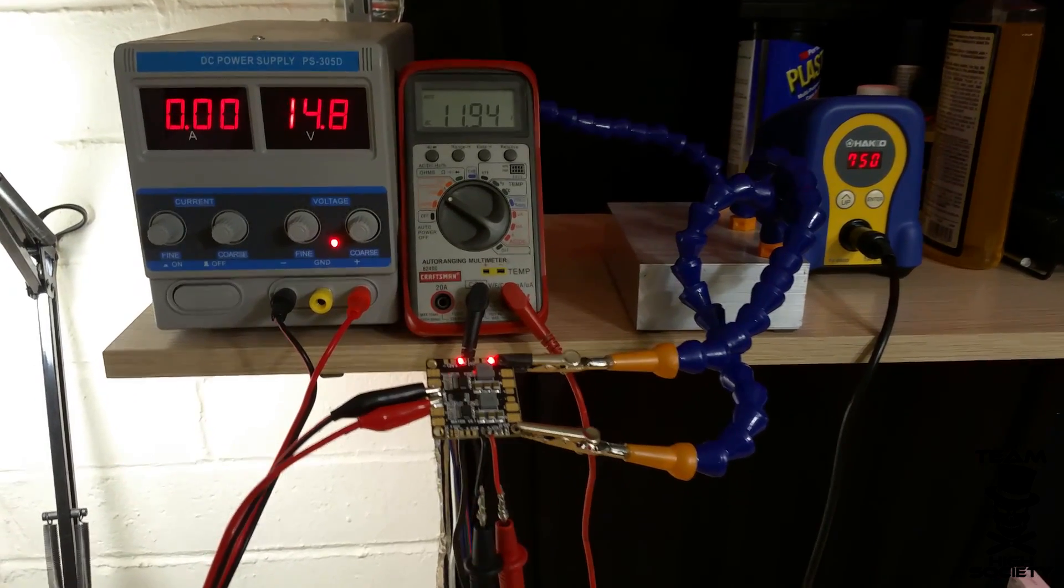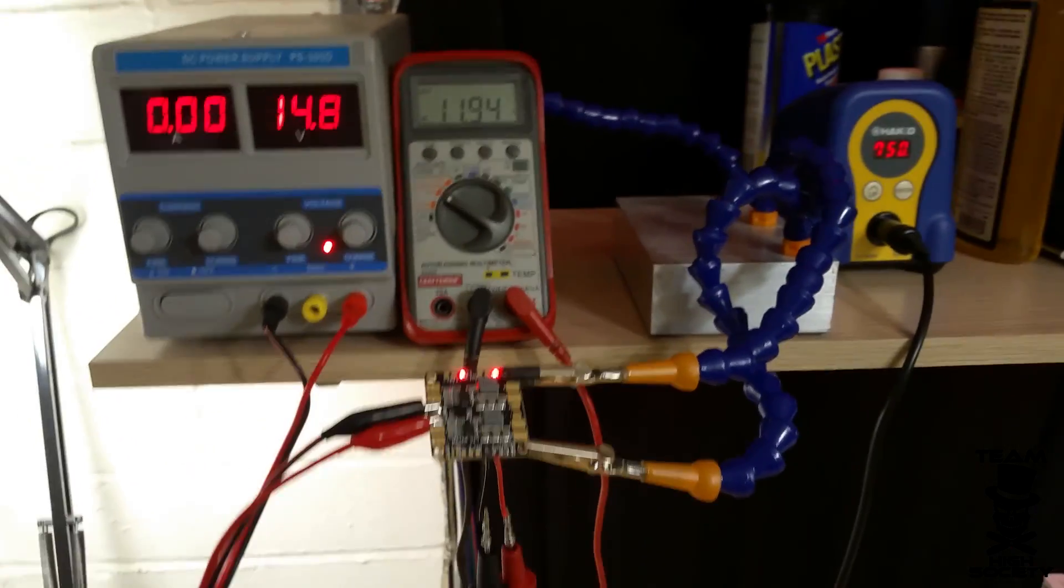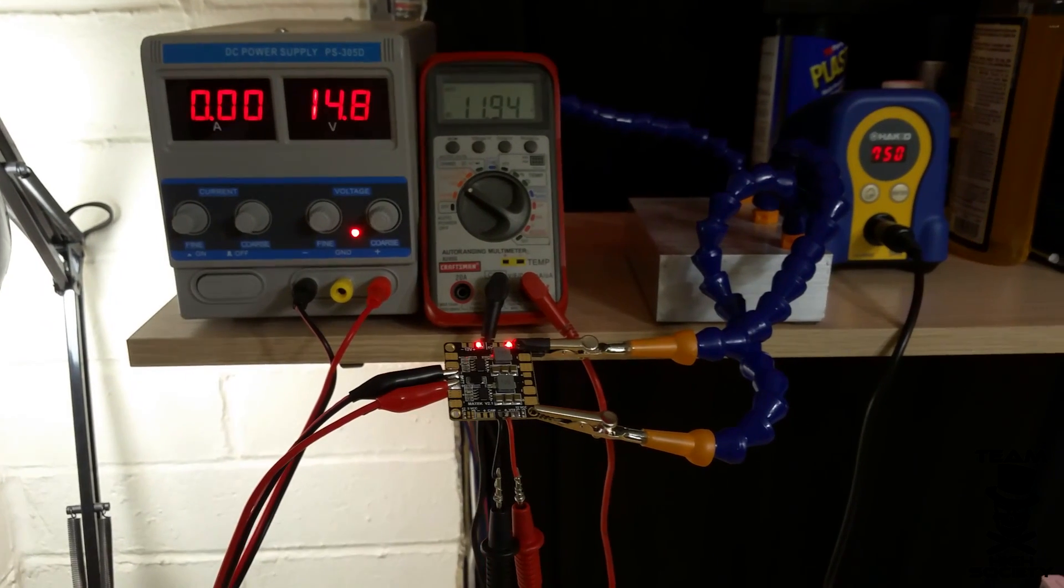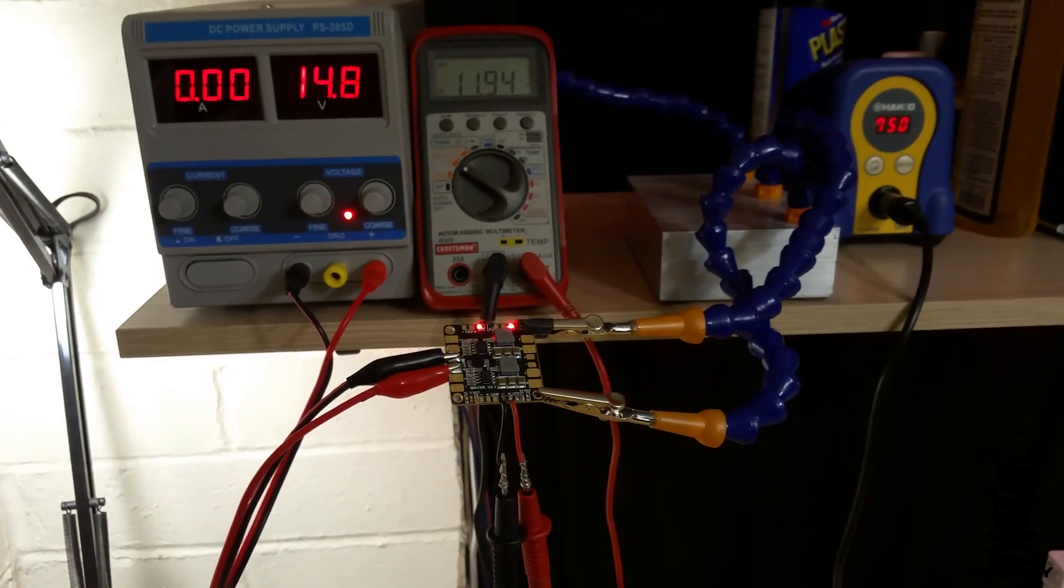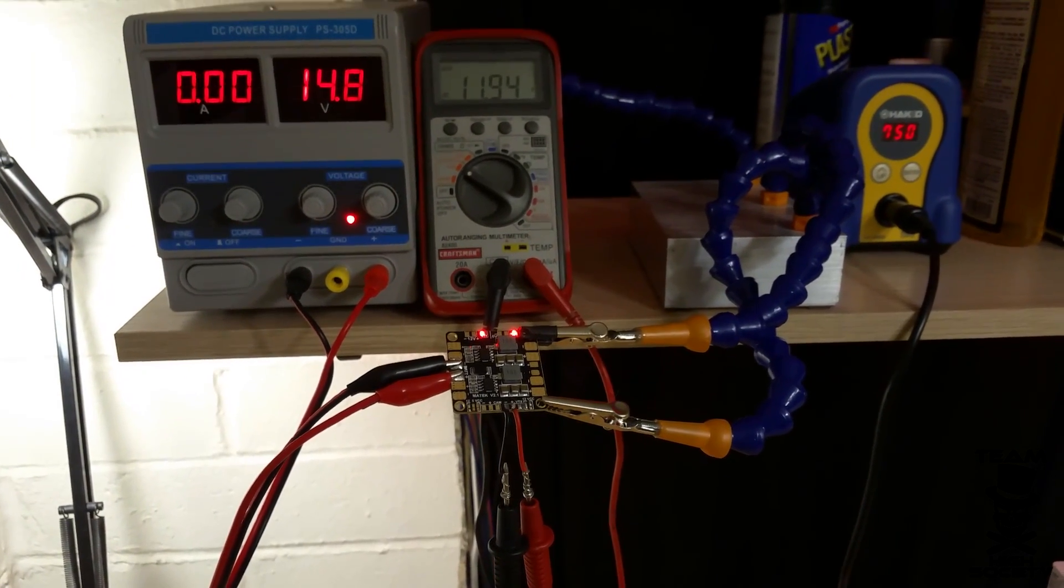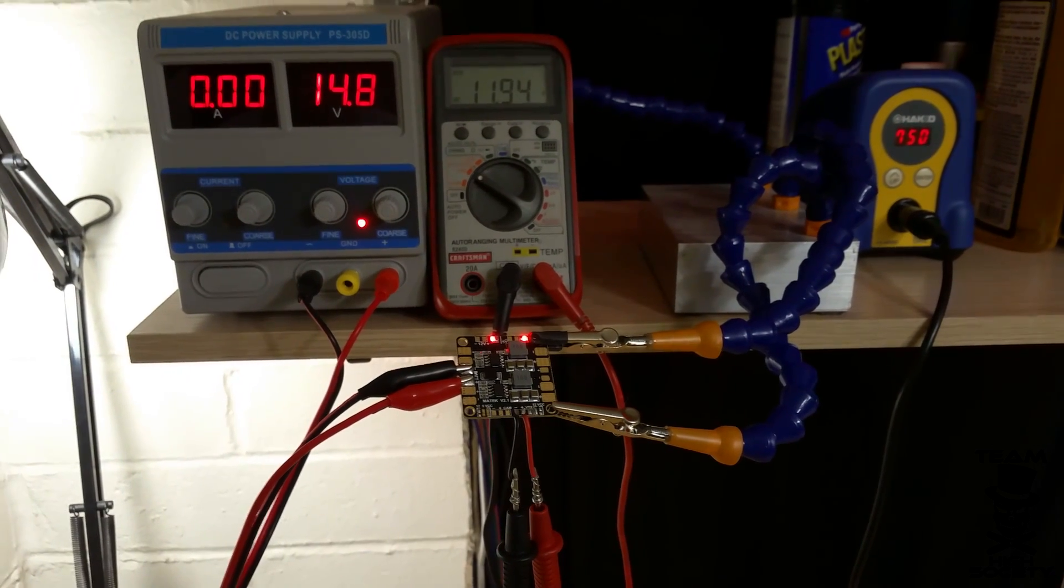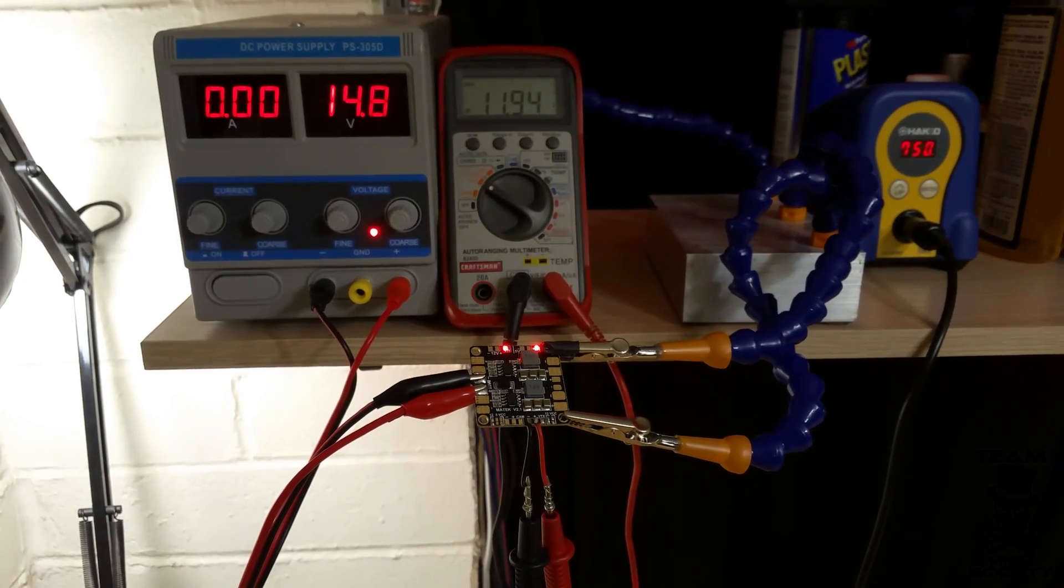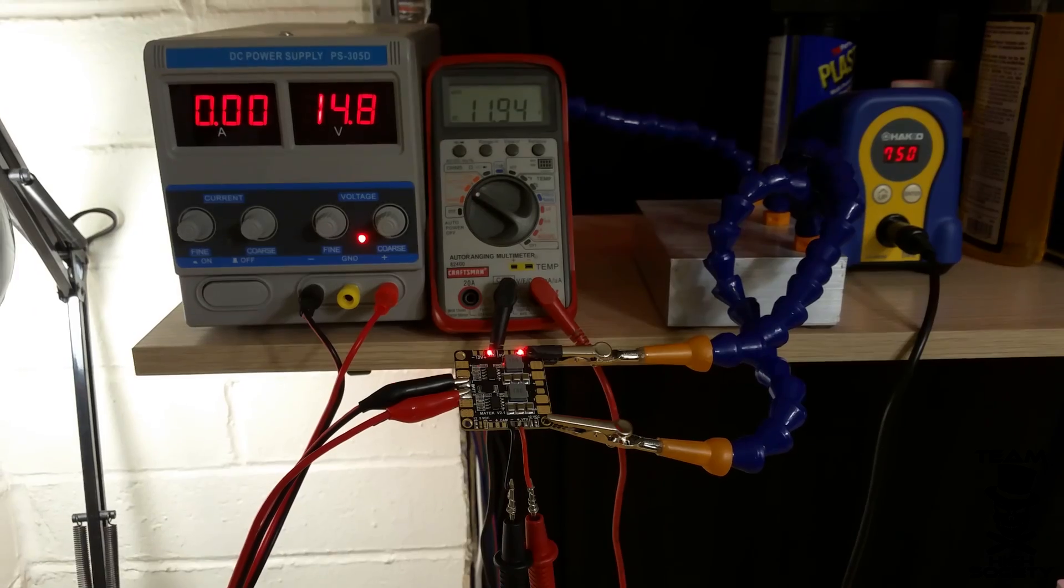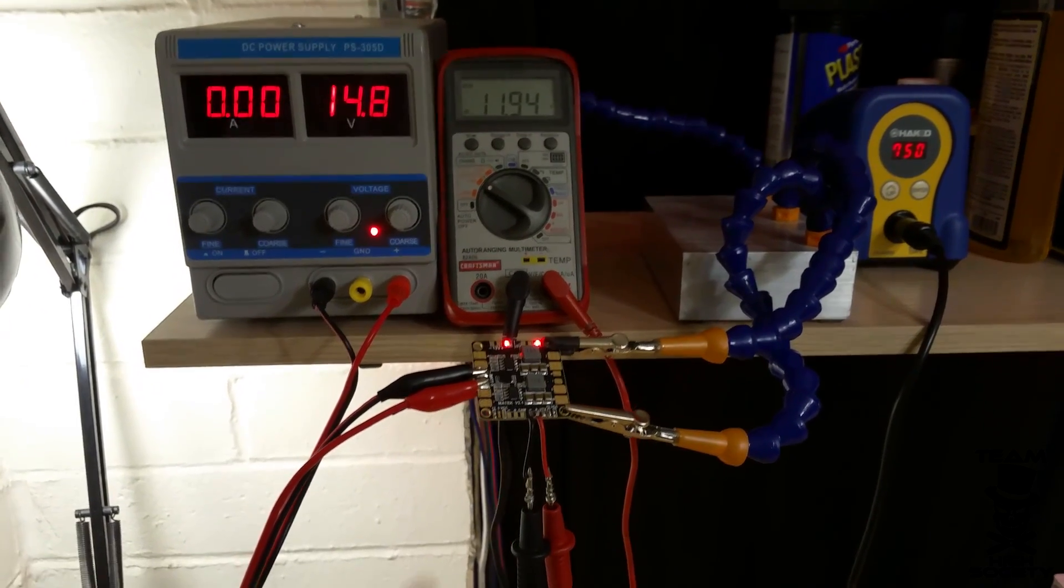Usually I run a 4S battery and then the VTX I run a 12 volt line to it. It hasn't been a problem except for under hard pulls we've lost video. This has happened on two different quads. On one of those quads we swapped the BEC out or swapped this actual board out here.